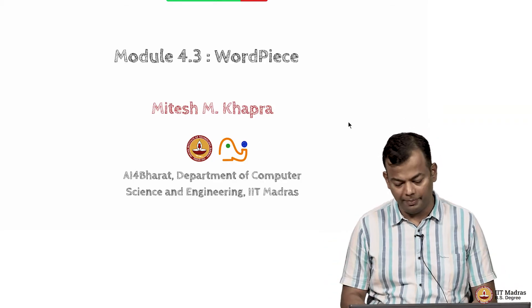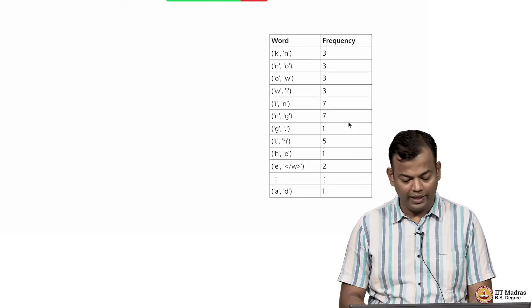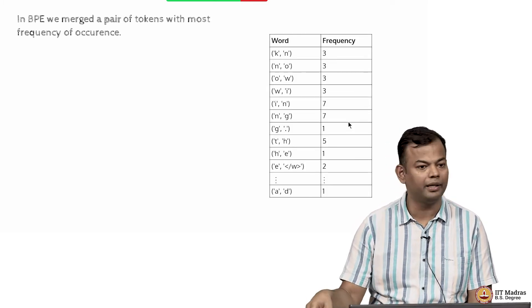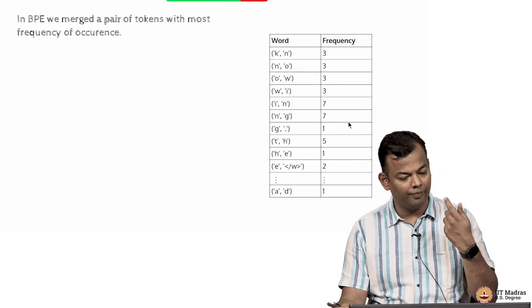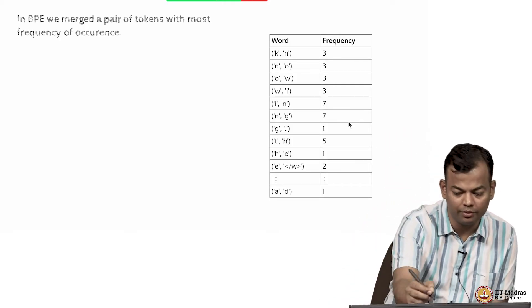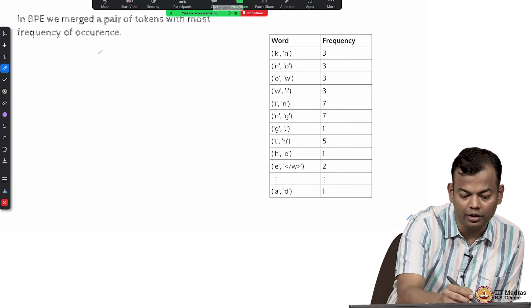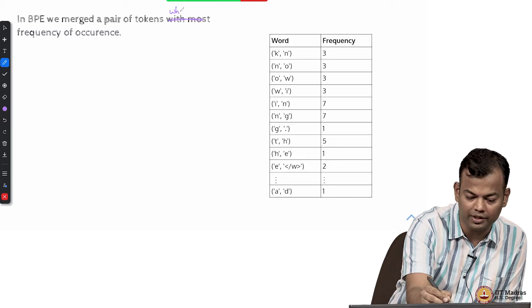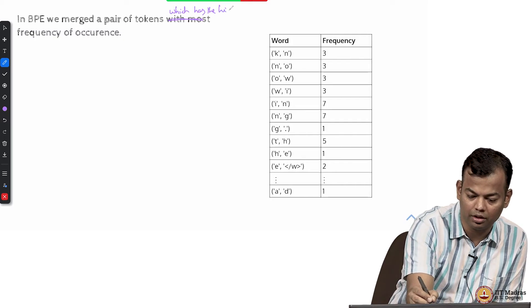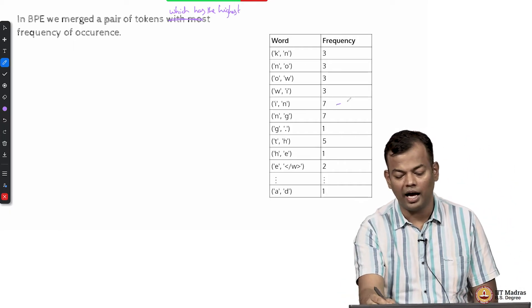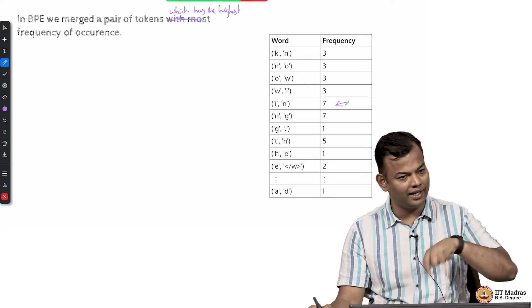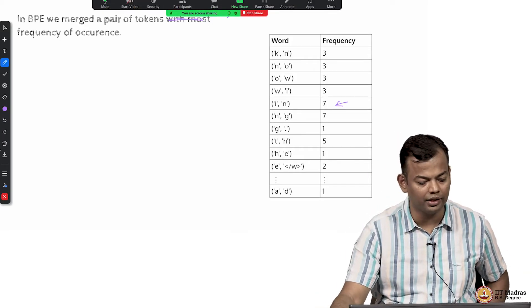Now let us look at word piece tokenizer. We start with BPE. In BPE we observed that we merge a pair of tokens which has the highest frequency. In this case IN had the highest frequency, so we merged IN and added that to our token list.